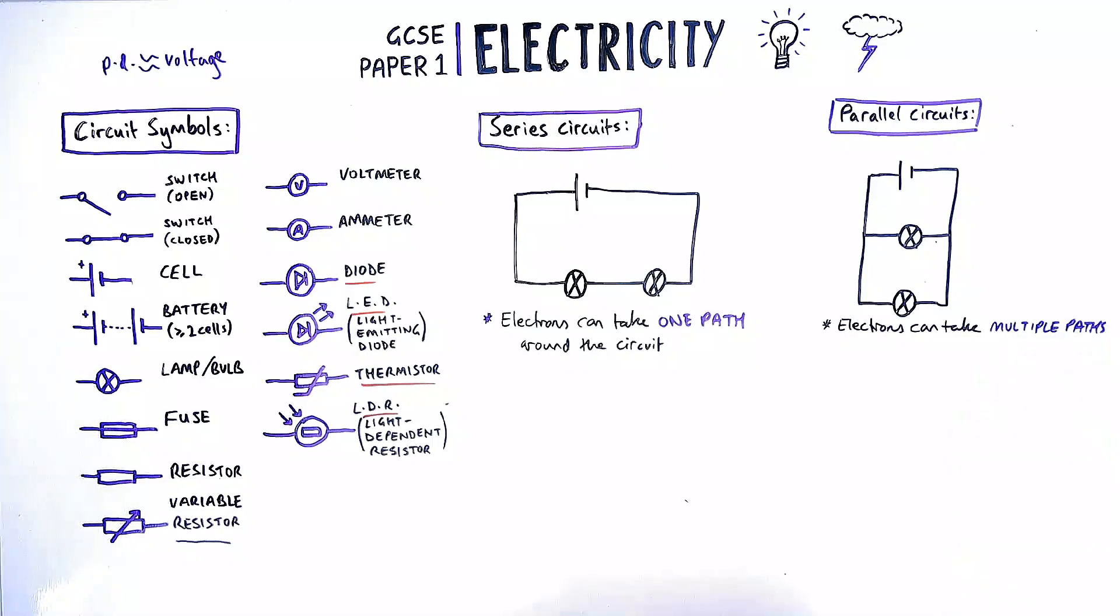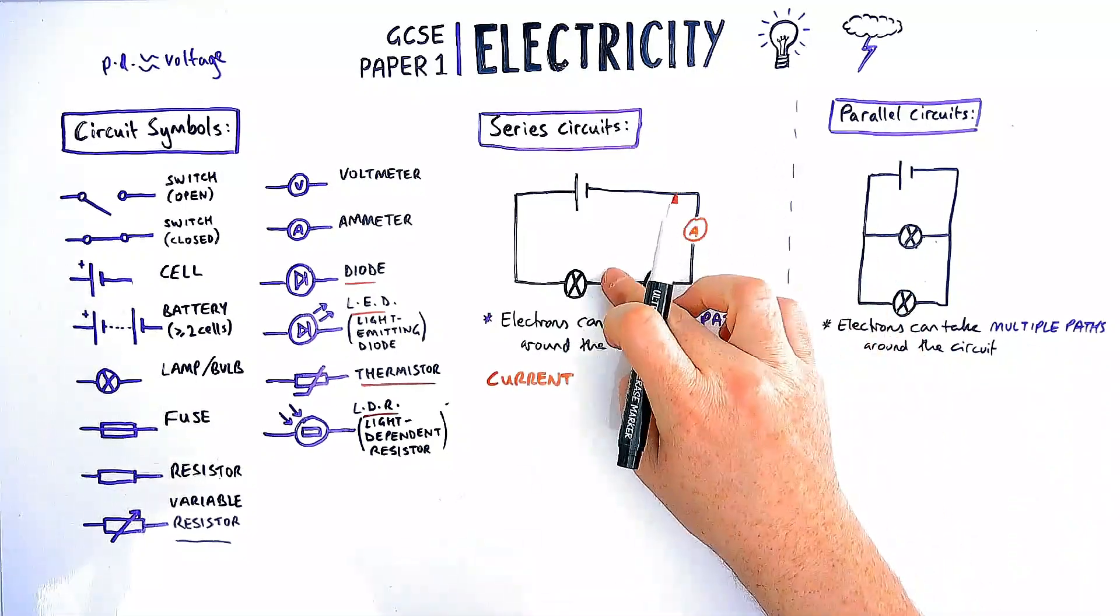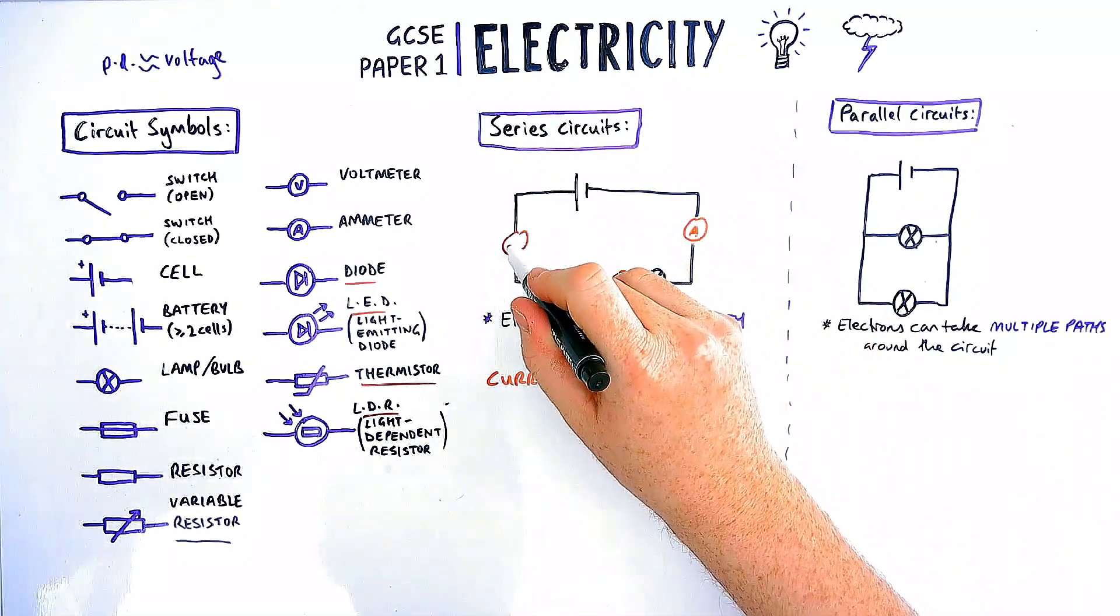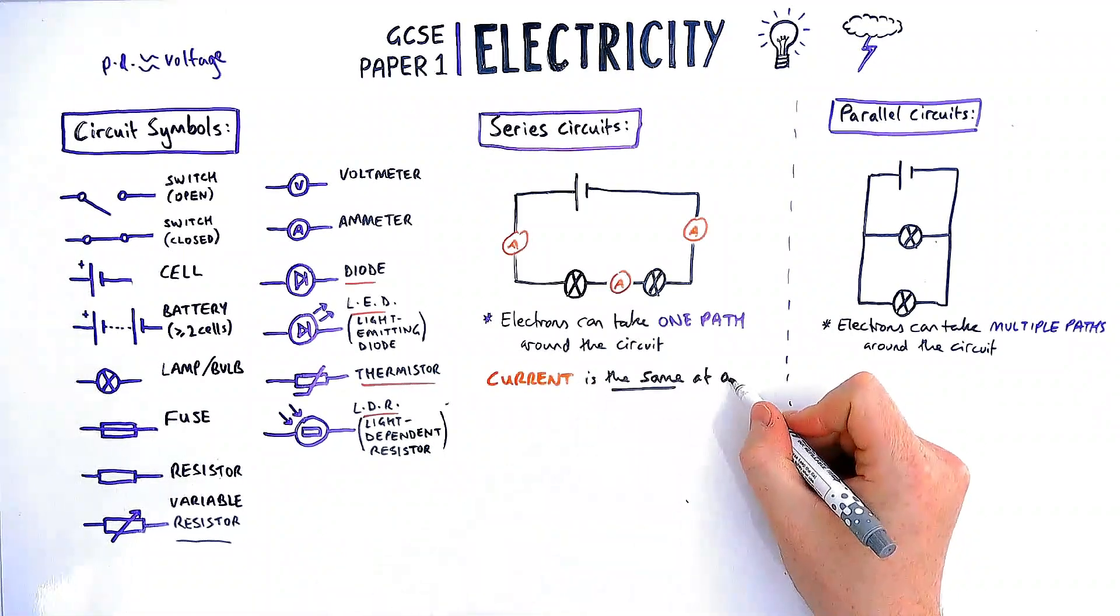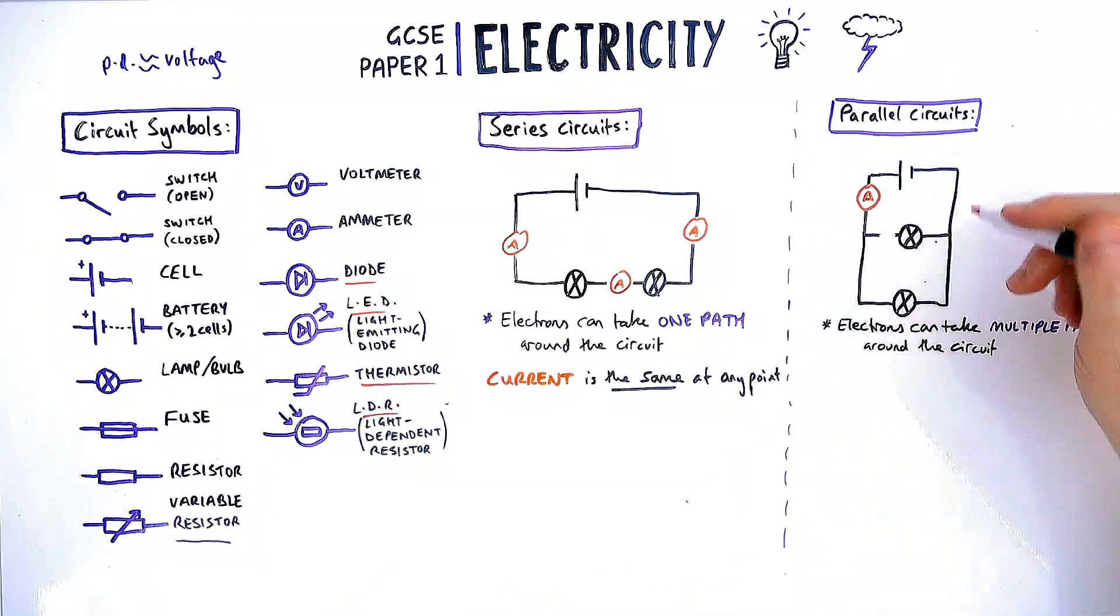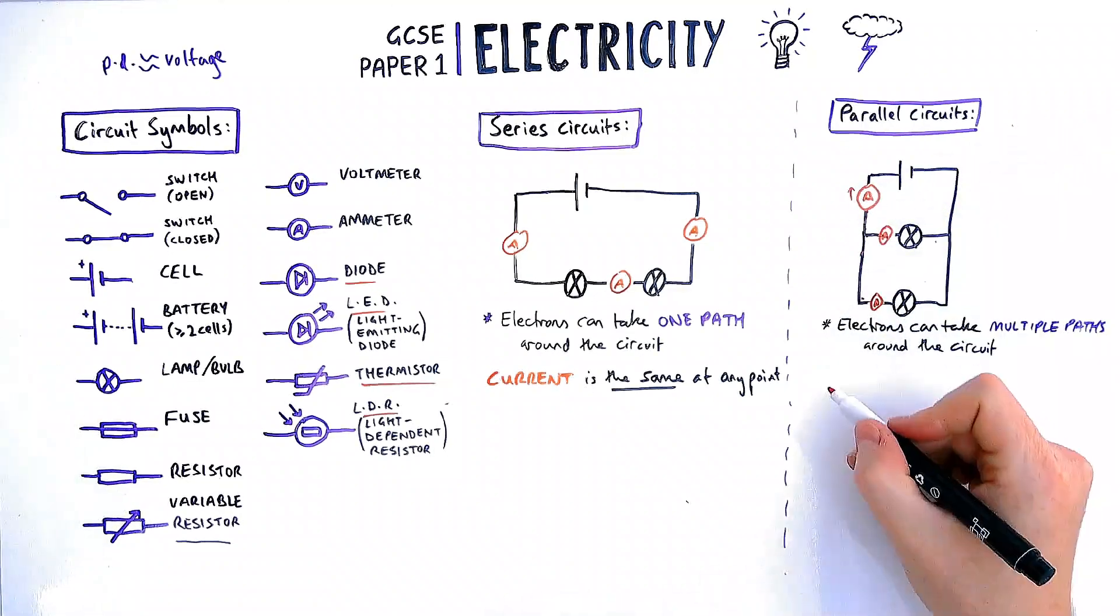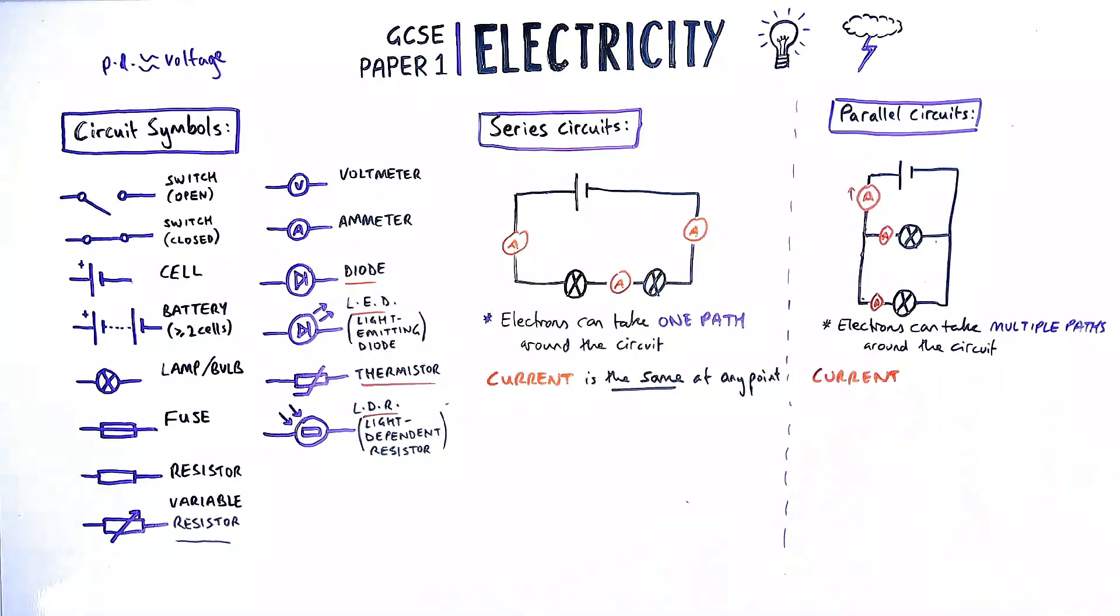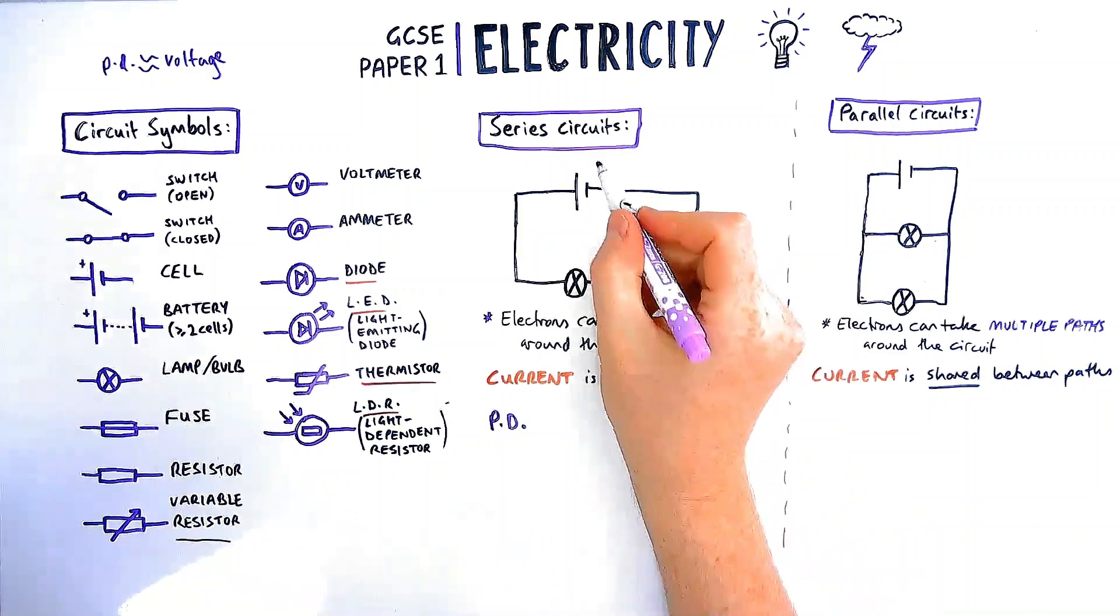We need to know how the current and PD vary depending on what circuit we're using. For a series circuit, if I put an ammeter at different points throughout the circuit, current does not get used up, so the current is the same at any point. If I do the same with a parallel circuit and have ammeters at the start and on each branch, there is more current nearer the battery and less on each branch. This shows us that current is shared between the paths or branches. If I had two amps going in initially, I'd have one amp shared, assuming the resistances of the bulbs are equal.